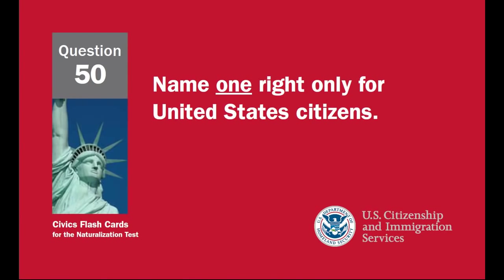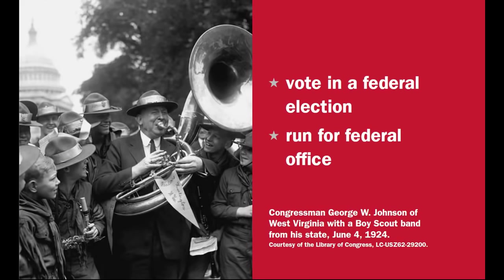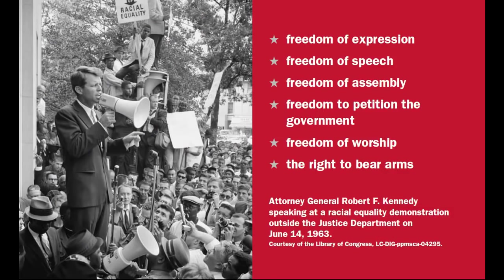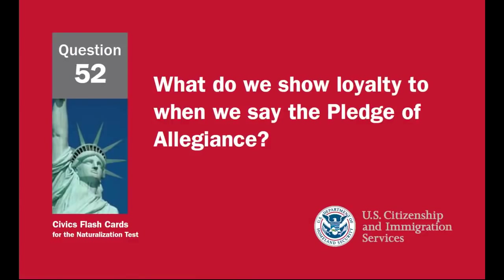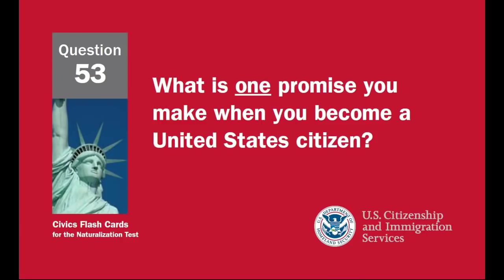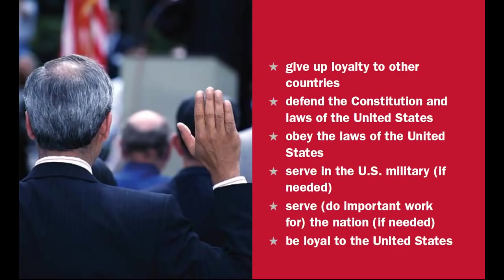Name one right only for United States citizens: vote in a federal election, or run for federal office. What are two rights of everyone living in the United States? Freedom of expression, freedom of speech, freedom of assembly, freedom to petition the government, freedom of worship, the right to bear arms. What do we show loyalty to when we say the Pledge of Allegiance? The United States and the flag. What is one promise you make when you become a United States citizen? Give up loyalty to other countries, defend the Constitution and laws of the United States, obey the laws, serve in the U.S. military if needed, do important work for the nation if needed, be loyal to the United States.